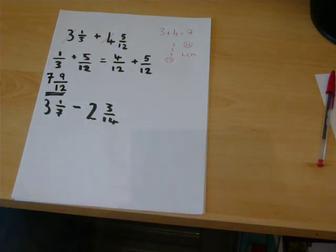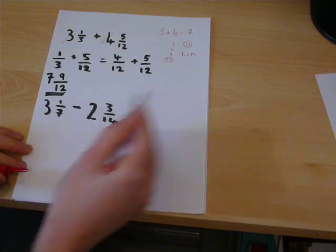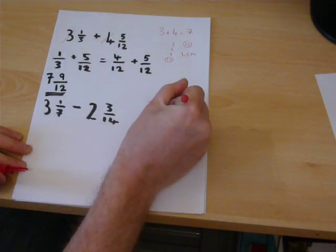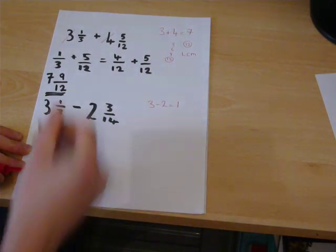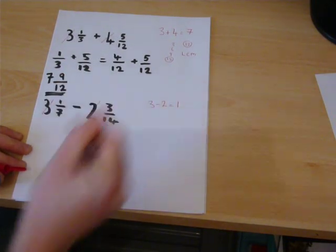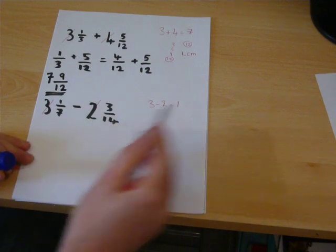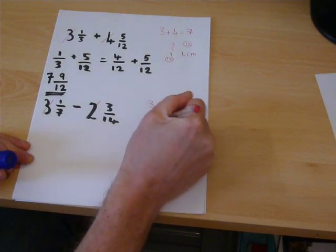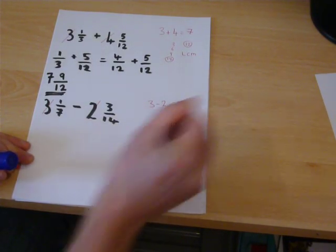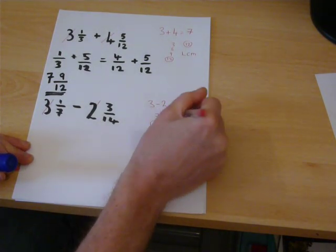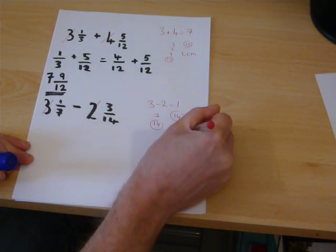Subtraction obeys the same rules. 3 take away 2 is 1. Then 1 seventh and 3 fourteenths. We write down our 7 times table. Our 14 times table. The lowest common multiple is 14.